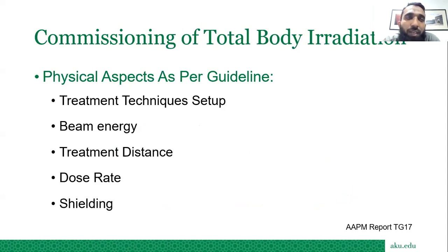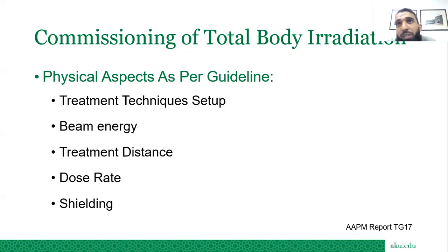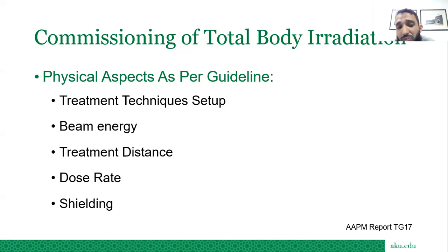For commissioning of total body radiation, the AAPM report TG-17 suggests special considerations about physical aspects of treatment: what treatment technique to use to deliver uniform dose, what energy to use, what treatment distance is needed, at what dose rate to deliver, and which vital organs to shield during treatment.